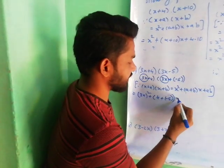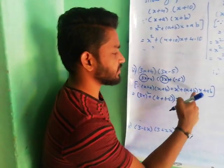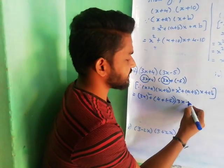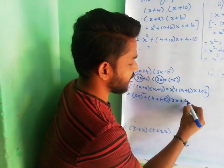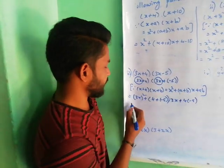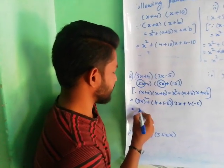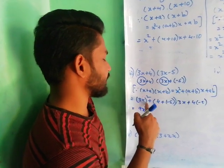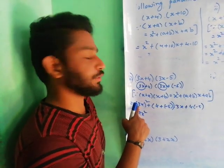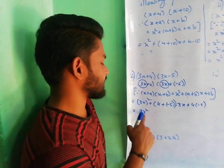Here x is 3x, so don't confuse. Here x is 3x. Plus ab — a value is 4, b value is minus 5. So 3x whole square means 9x square, because whole square is there for 3 and x: 3 square into x square, and 3 square is 9. So 9x square.